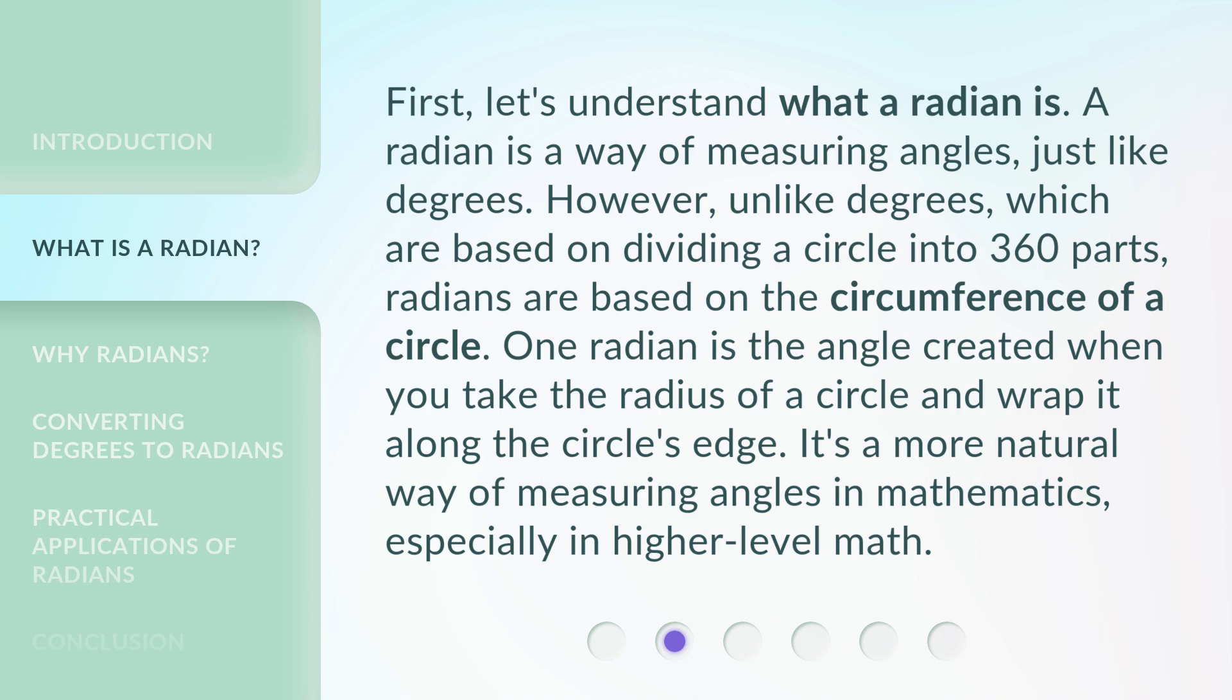One radian is the angle created when you take the radius of a circle and wrap it along the circle's edge. It's a more natural way of measuring angles in mathematics, especially in higher-level math.